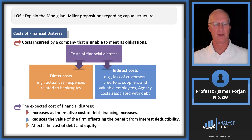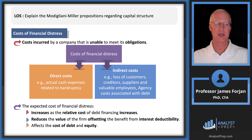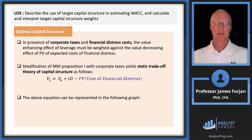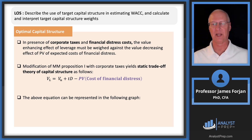Financial distress costs increase as the relative cost of debt financing rises — if bondholders used to charge 10% and now they're charging 13%, 15%, or 20%, that makes sense. These costs reduce the value of the firm and affect both the cost of debt and cost of equity. So financial distress costs start to eat into the tax interest subsidy. Considering taxes and financial distress costs together leads us to something we can call an optimal capital structure — even though Modigliani and Miller didn't explicitly discuss this in 1958, subsequent researchers developed this idea.